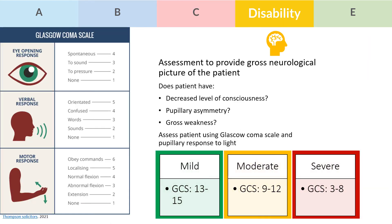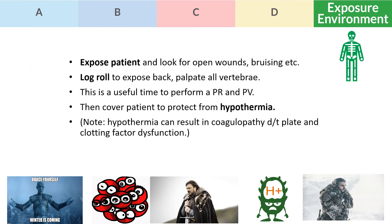The Glasgow Coma Scale and lateralizing signs for brain trauma can be used to assess the current level of disability of the patient. Lastly, in your rapid primary survey, the patient is exposed to look for any open wounds that may need proper dressing. Log-roll the patient to expose the back and palpate each vertebra. Address any fractures that may need reduction and immobilization, and do not forget to cover the patient once you are done to prevent hypothermia.